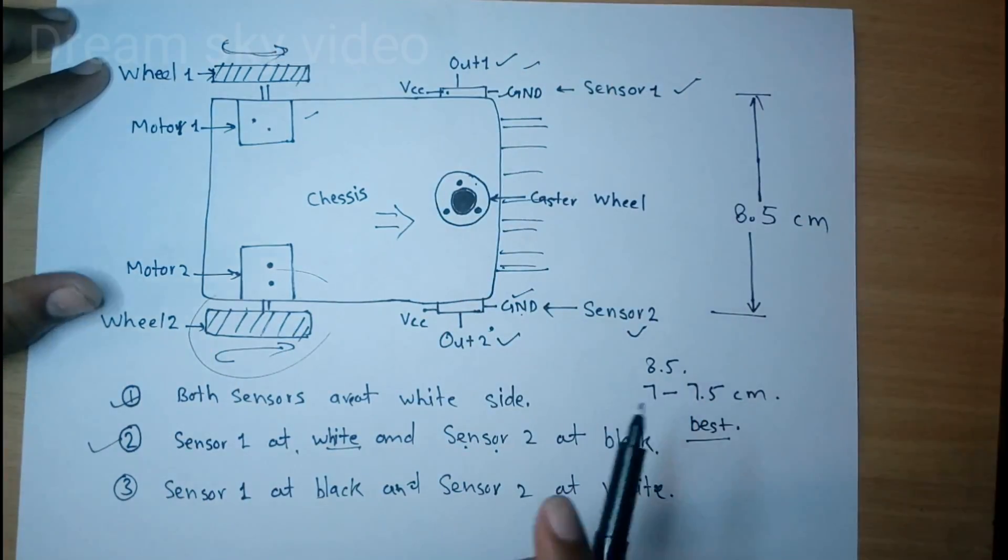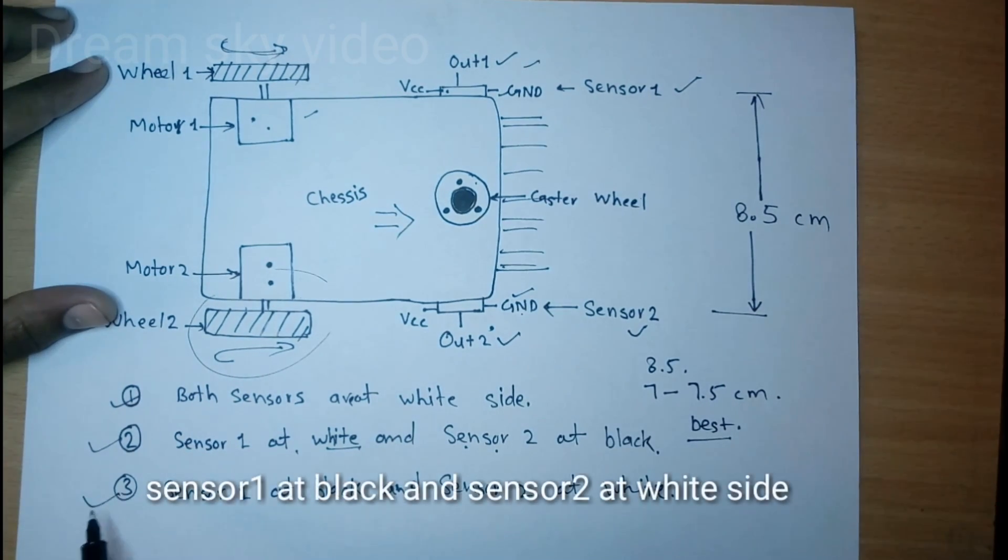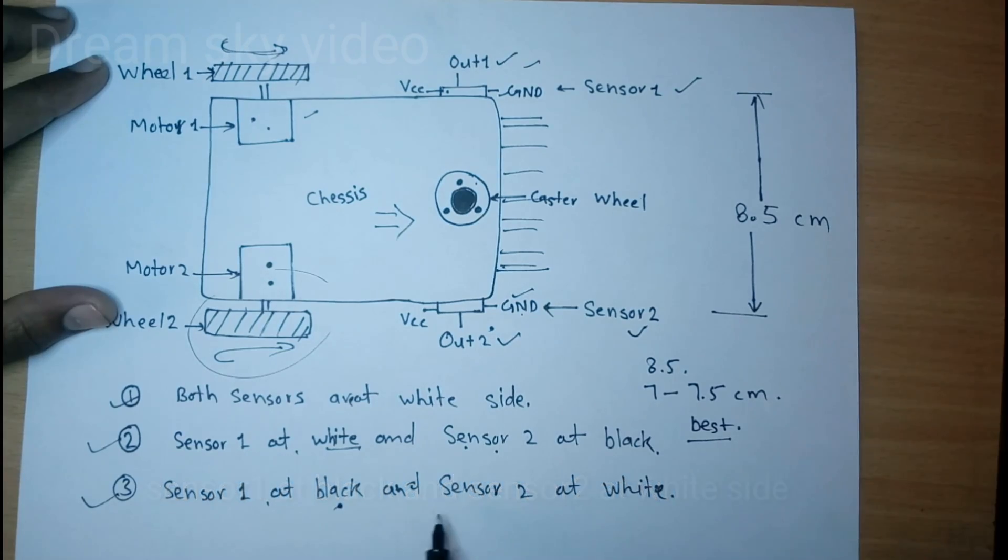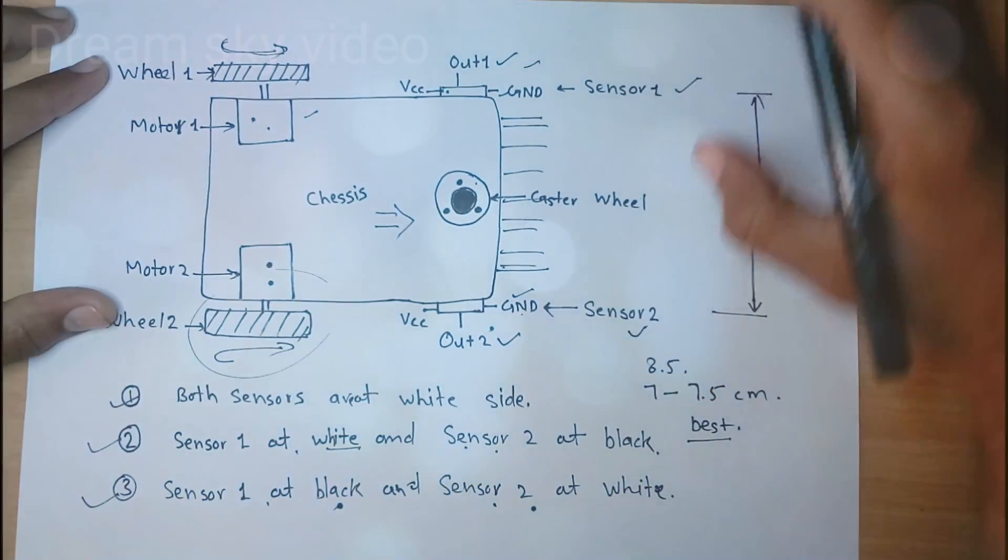And in third condition it is opposite of second condition, so sensor one at black and sensor two at white. So this is moving left side.